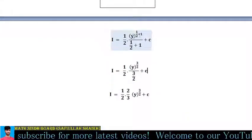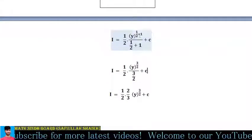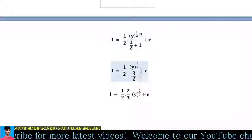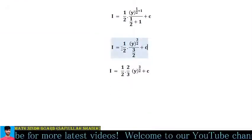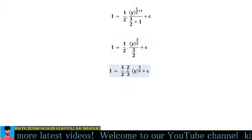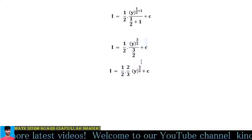Since 1/2 + 1 = 3/2, we get y^(3/2) divided by 3/2, plus c. This equals 1/2 times y^(3/2) times 2/3, plus c.